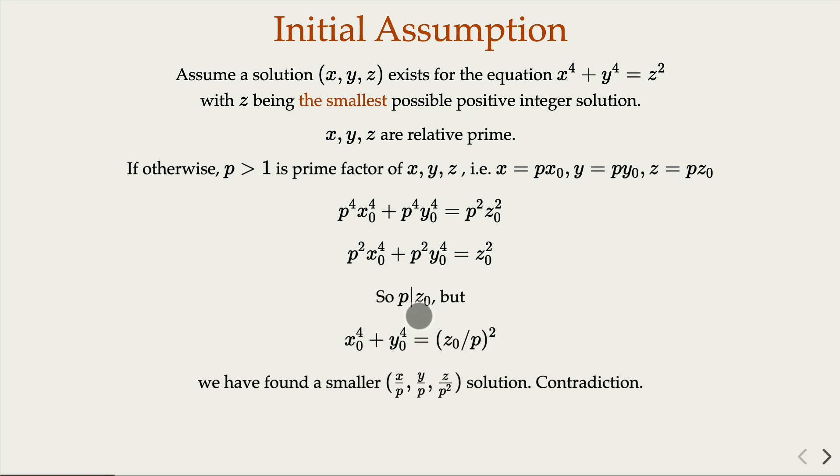Which means a new pair here, x divided by p, y divided by p, and z here is a factor of p squared. So this is another integer solution, but has a smaller z value, which is a contradiction. So if we find a smallest x, y, z, then we claim that they must be relatively prime.